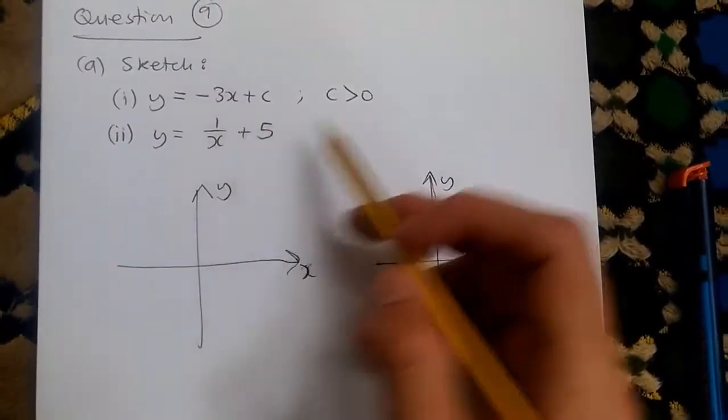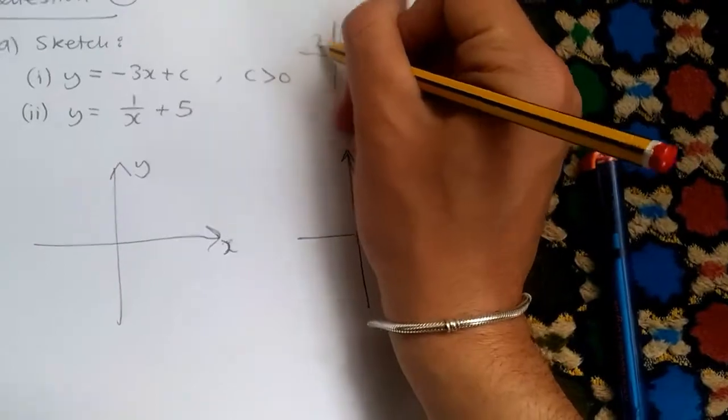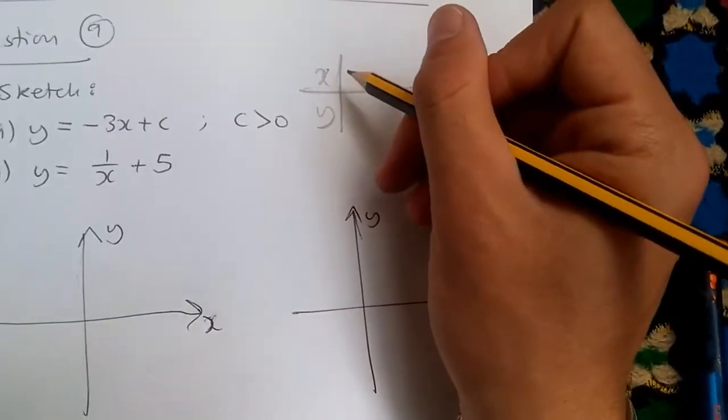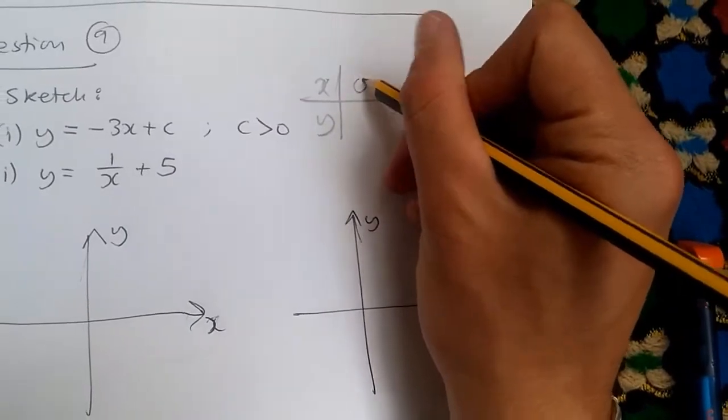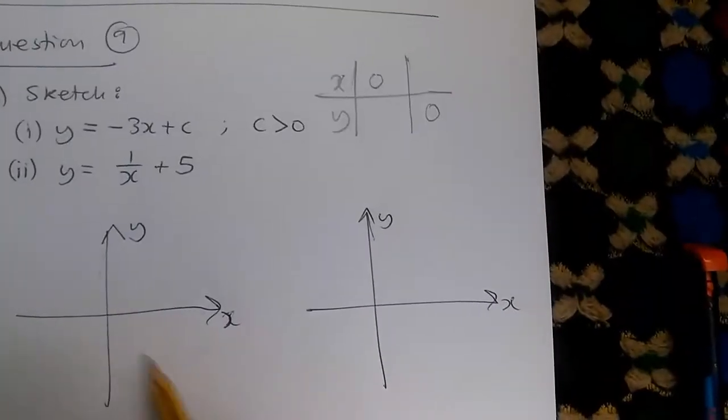To sketch this linear graph, I'll draw a nice table here, x and y, and I'll just plot some values. So I'll always use when x is 0 and y is 0. Why? Because this shows you the points of intersection with the x and y axes.